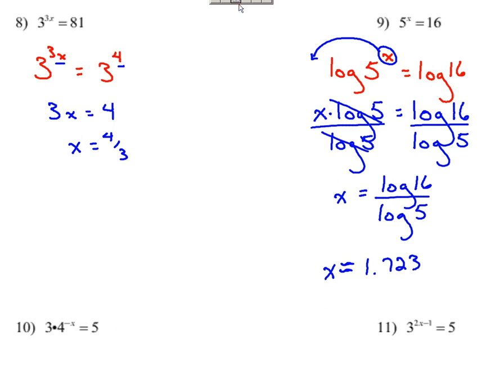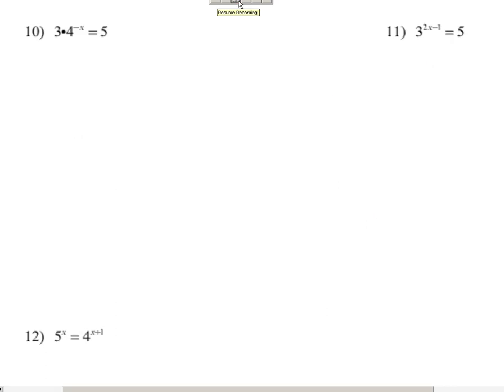All right, let's go down to number 10 now. Actually, here we have three times four raised to the negative x equals five. Easy trap to fall into here is take three and multiply four, but why can't we do that? Well, because you have an exponent, right? You've got to acknowledge that first. So get the exponential piece by itself. Divide the three over. And let's try to keep things as exact as possible. Let's keep this as five-thirds for the time being.